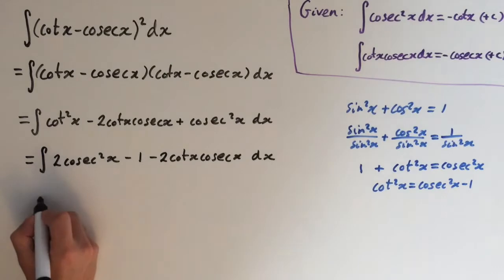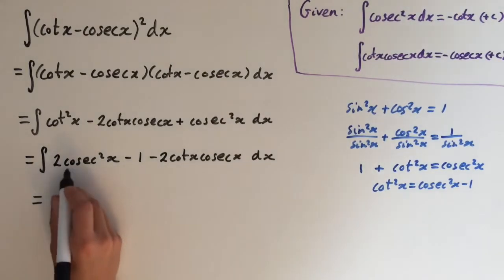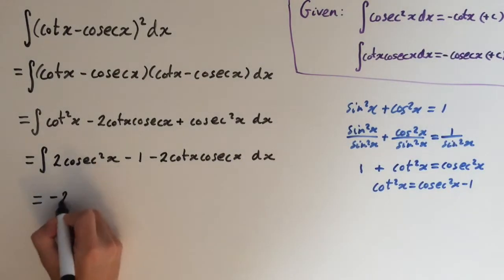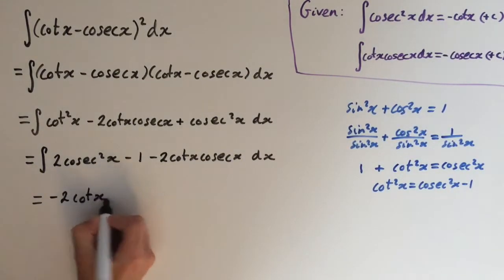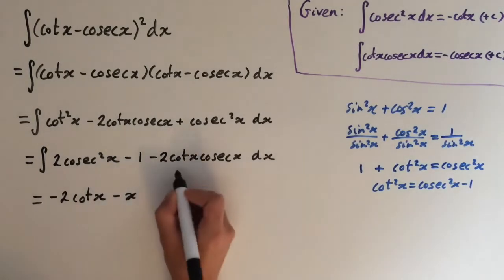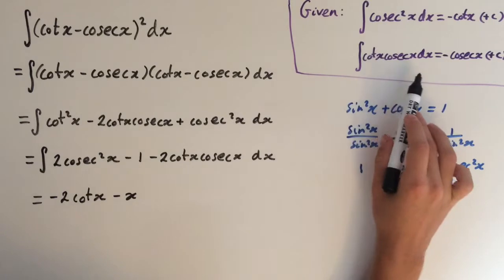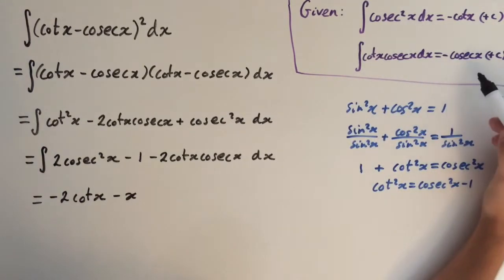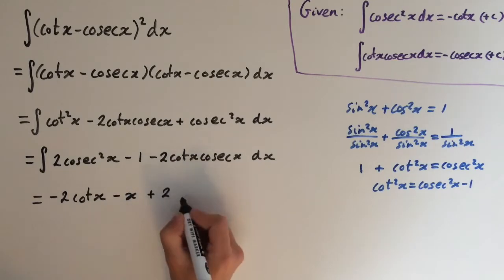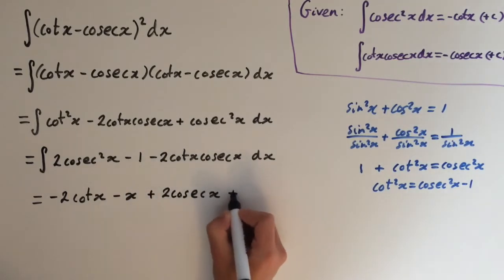Now we can integrate all of these. The integral of cot x squared is minus cot x, so we get minus 2 cot of x. The integral of minus 1 is minus x. And the integral of minus 2 cot x cos x gives us plus 2 cos x, plus c.